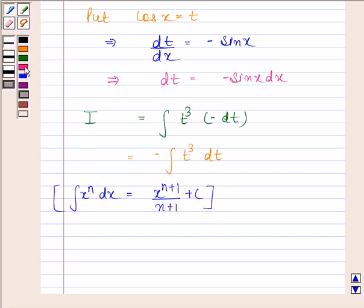Using this formula, ∫t³ dt = t^(3+1)/(3+1) + c, which equals t^4/4 + c.